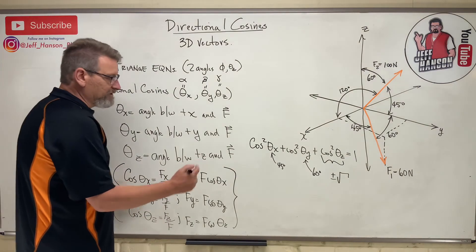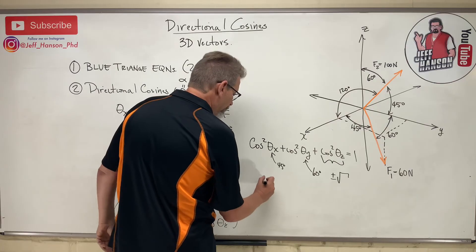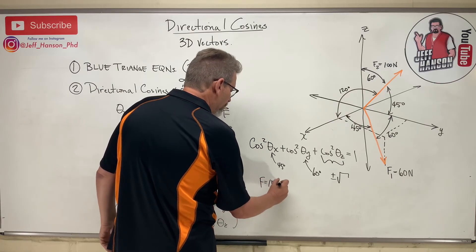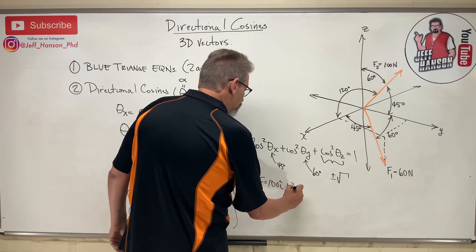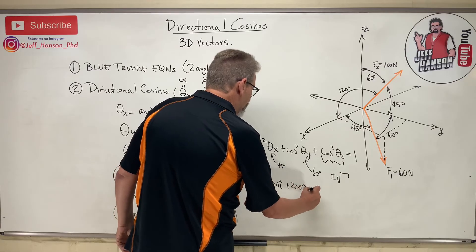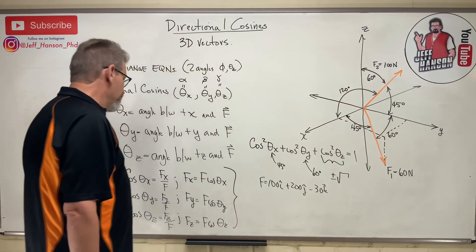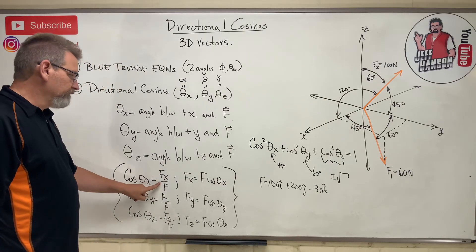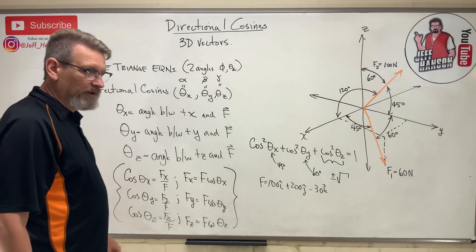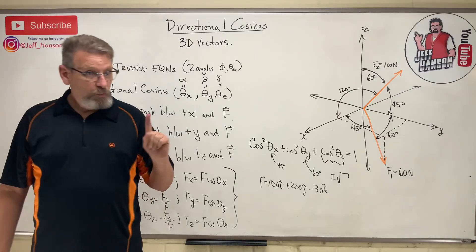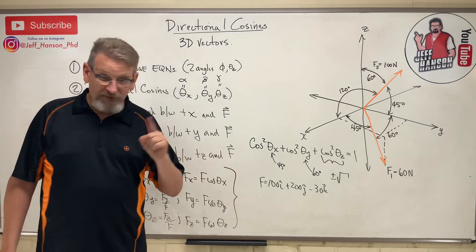Because fx, let's just make up a vector. F equals 100 i-hat plus 200 j-hat minus 30 k-hat. There's a vector. So how would I find that? Number one thing I have to do is find my calculator because we're going to find the magnitude of that vector. Let me find my calculator.